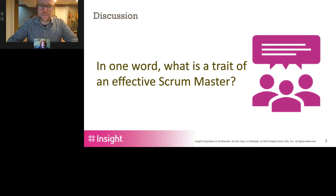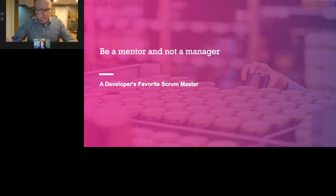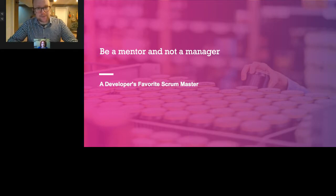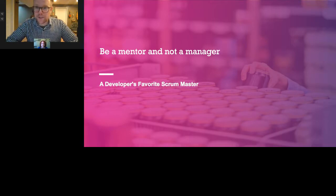I'm going to go ahead and jump into the first characteristic of a scrum master that we're going to talk about: be a mentor and not a manager. I'm going to spend a little bit more time on this one than the rest because it is so foundational to everything else. I'm also going to be a little bit more rooted in the scrum guide here. I want to build a really solid foundation, so let's look at what the scrum guide says.